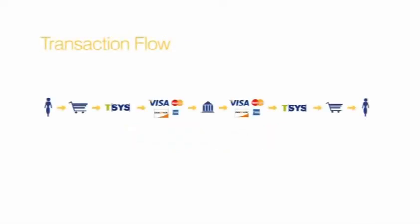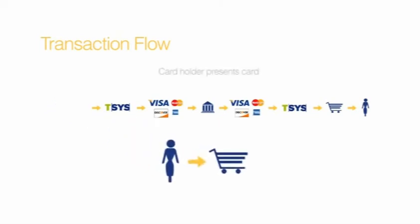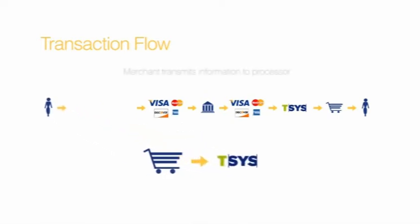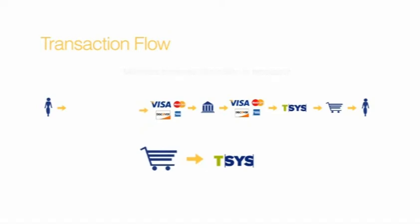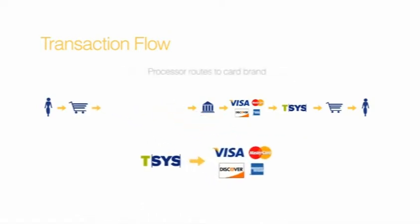The majority of card transactions follow the same basic flow pattern. A cardholder presents a card for payment. A business or merchant accepts the card and transmits card and purchase information to a payment processor, which, via an authorization vendor, routes the card and purchase information to the appropriate card brand.